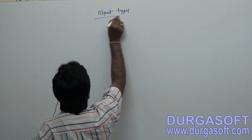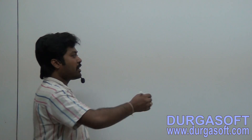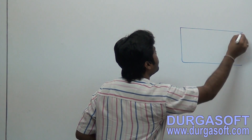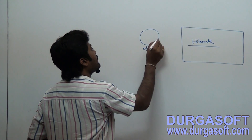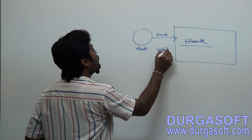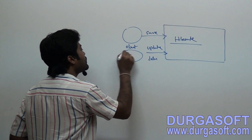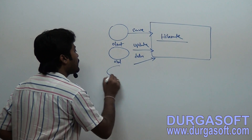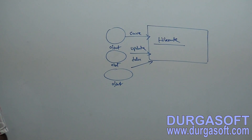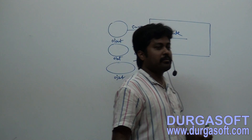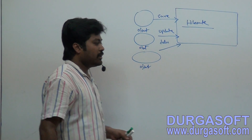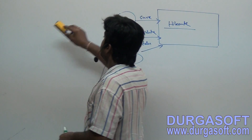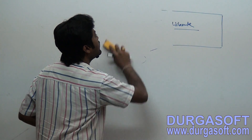In Hibernate, object types — we have to know first. In Hibernate, using an object we have to make CRUD operations. If you want to do save, update, or delete, whatever the operation, you have to pass an object. So here, how many types of objects do we have? In Hibernate, we describe object scopes — multiple scopes. There are three types of objects.